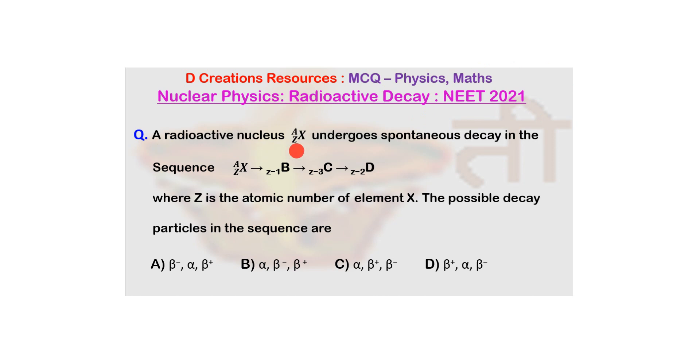The question is: a radioactive nucleus X with mass number A and atomic number Z undergoes spontaneous decay in the sequence X(A,Z) goes to B(Z-1), C(Z-3), and D(Z-2).